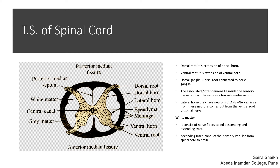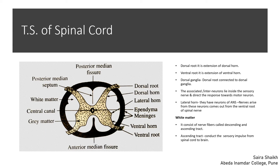In the white matter, two types of tracts — bundles of nerve fibers — are present. The myelinated nerve fibers are of two types: ascending and descending. The ascending tract conducts sensory impulses from the spinal cord towards the brain. In the descending tract, nerve fibers conduct impulses from the brain to the spinal cord, so it is motor in nature.